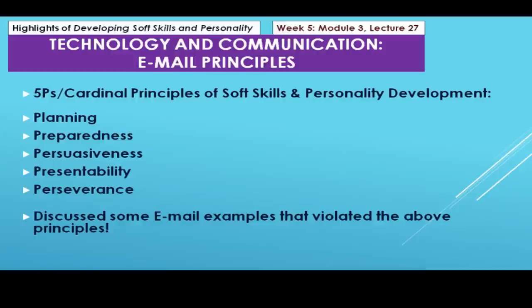The 27th lecture in week 5, module 3, focused on email principles in terms of soft skills and personality development. The five cardinal principles you should follow are: planning, preparedness, persuasiveness, presentability, and perseverance. I showed email examples that violated all these principles and ended up causing communication disasters. All were indicating that the sender utterly lacked soft skills and had no sense of personality development.